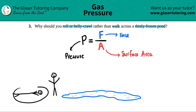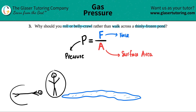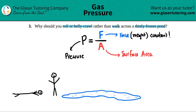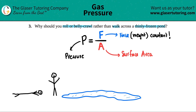Let's pretend it's the same person — me — first walking across the pond, then belly crawling. In that case, the force would be the same. A type of force is weight, so your weight is just a force. Let's say that force is constant, so for a given constant weight, there can be changes in pressure because of surface area.